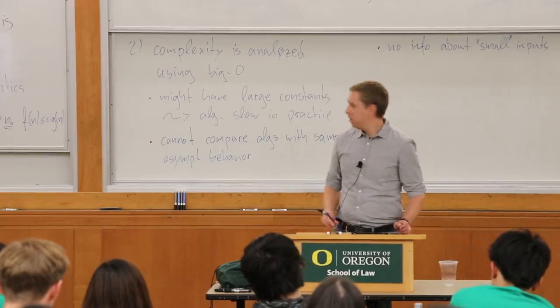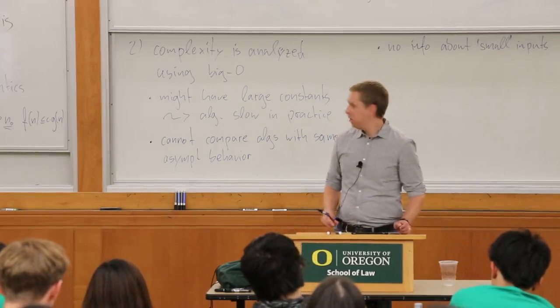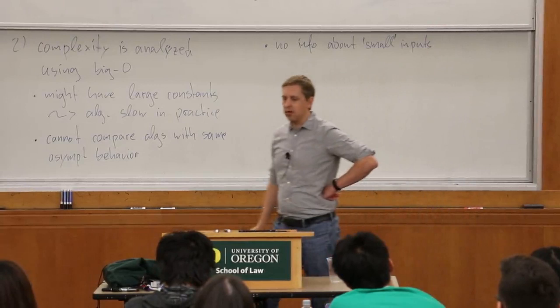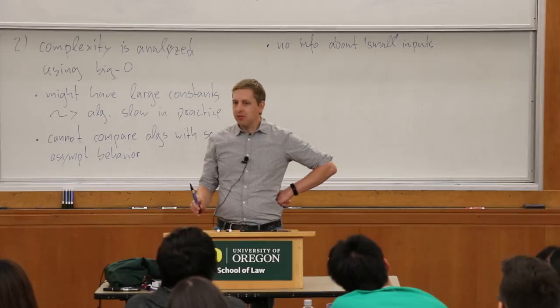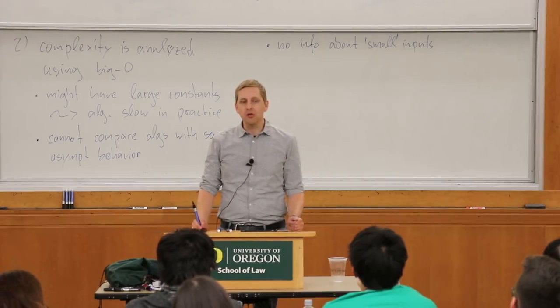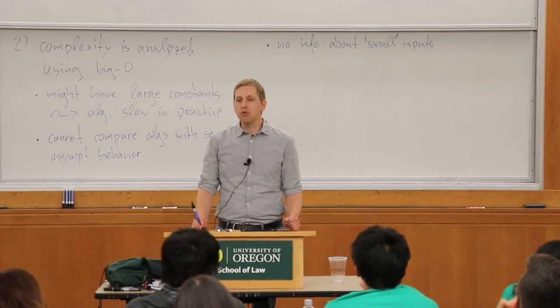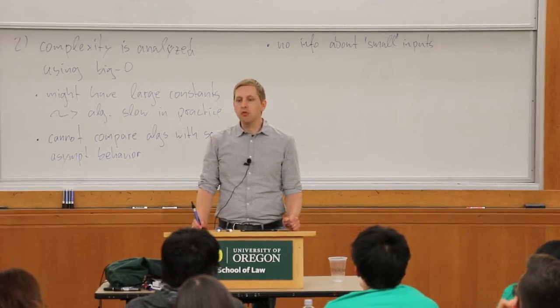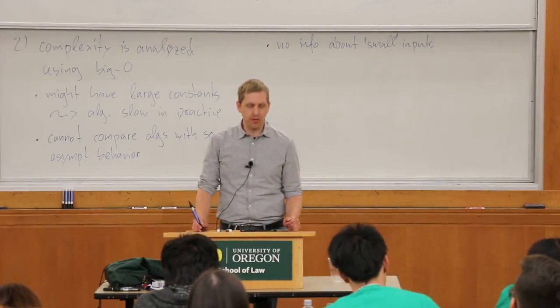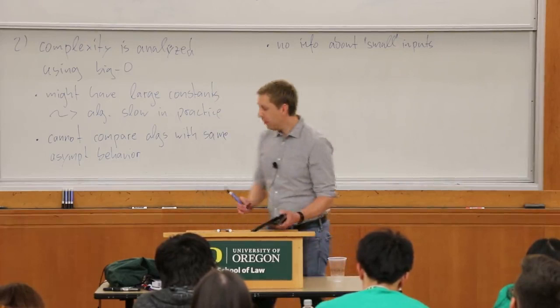Another problem that falls into the pseudocode column: they don't specify what the representation of the input is, and that can make a big difference. If you say 'given a graph,' how is it specified? In some papers, they choose a particularly unnatural specification where every problem becomes NP-hard because it is very difficult to decode the input. This is sometimes hidden in the pseudocode notion but is very important.